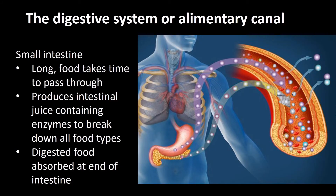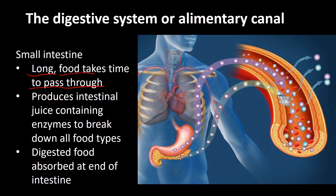The small intestine is very long — seven meters to be exact — because the food needs time to be properly broken down. One treatment for obesity actually involves removing part of the stomach and intestine so less food can be digested and absorbed. The small intestine produces intestinal juice with enzymes to break down all types of food, making it your main digestive organ.